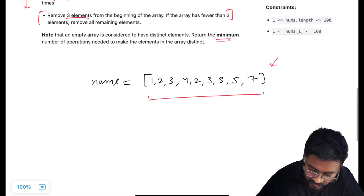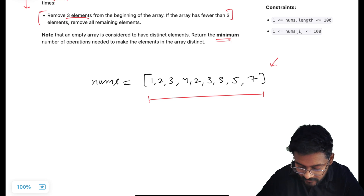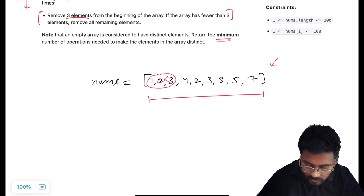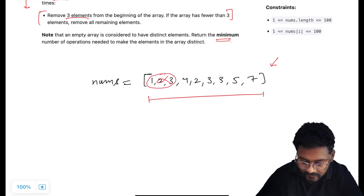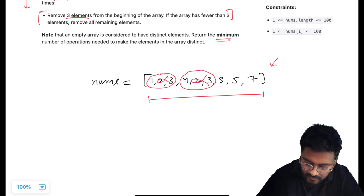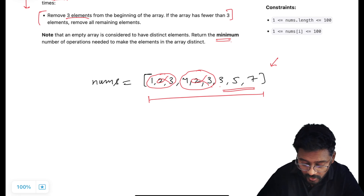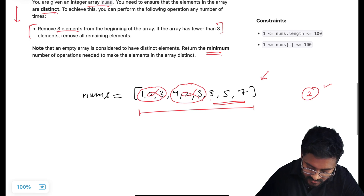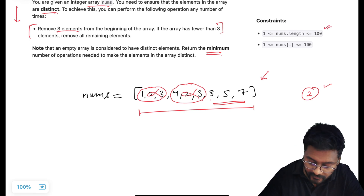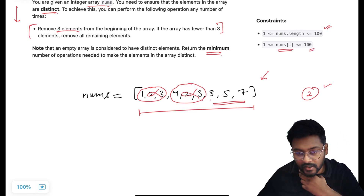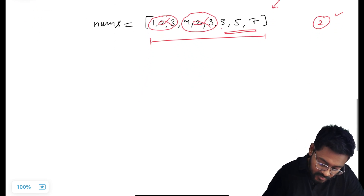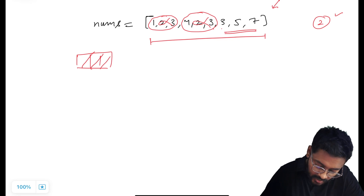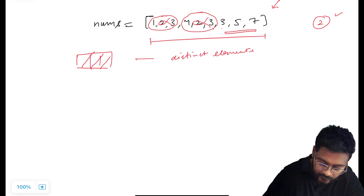This array is given to us containing integers that can include duplicates. One operation means picking three elements from the start and removing them. After one operation, we check if duplicates remain — for example, if 3 is still repeating, we perform one more operation, removing three more elements from the start. Now the remaining elements are 3, 5, 7 — all unique. Since all are unique, we stop and return how many operations were performed.